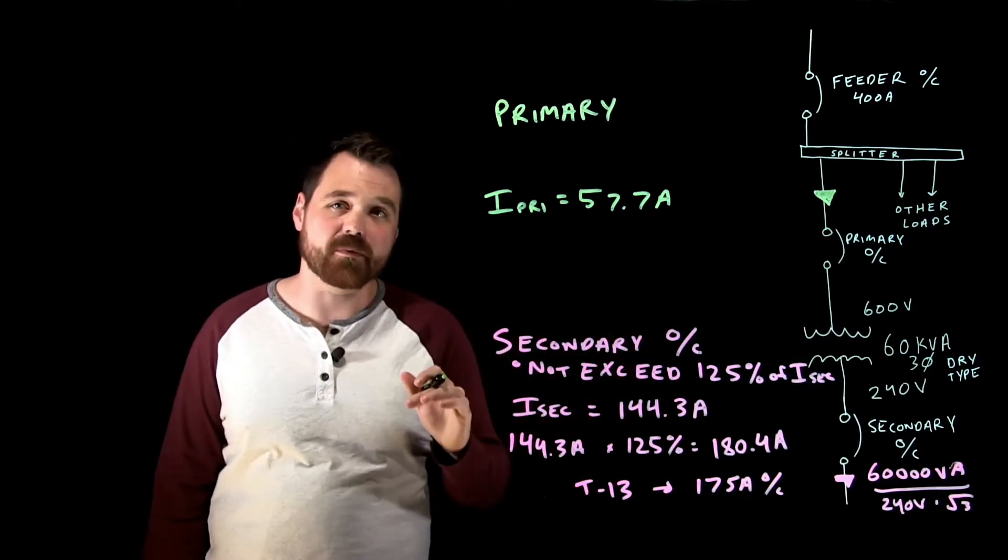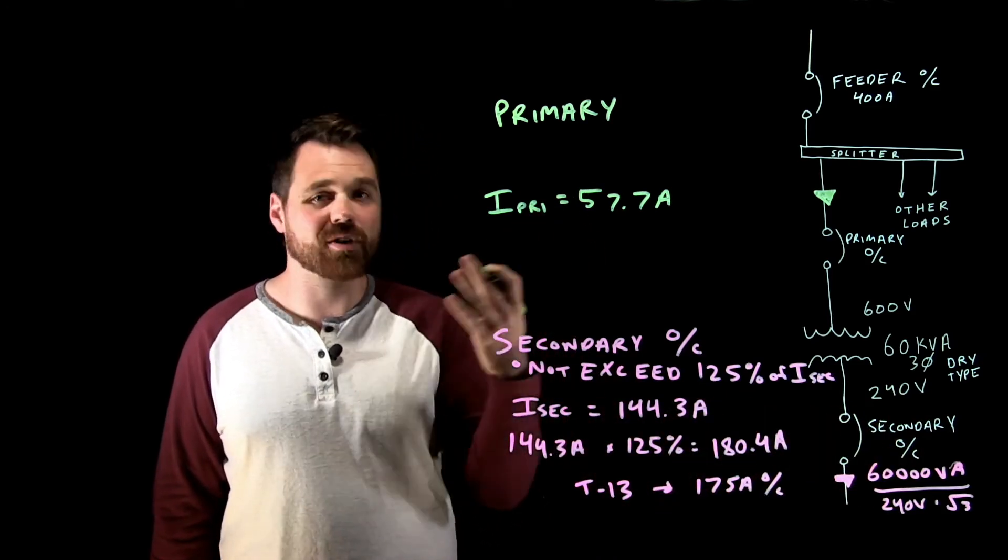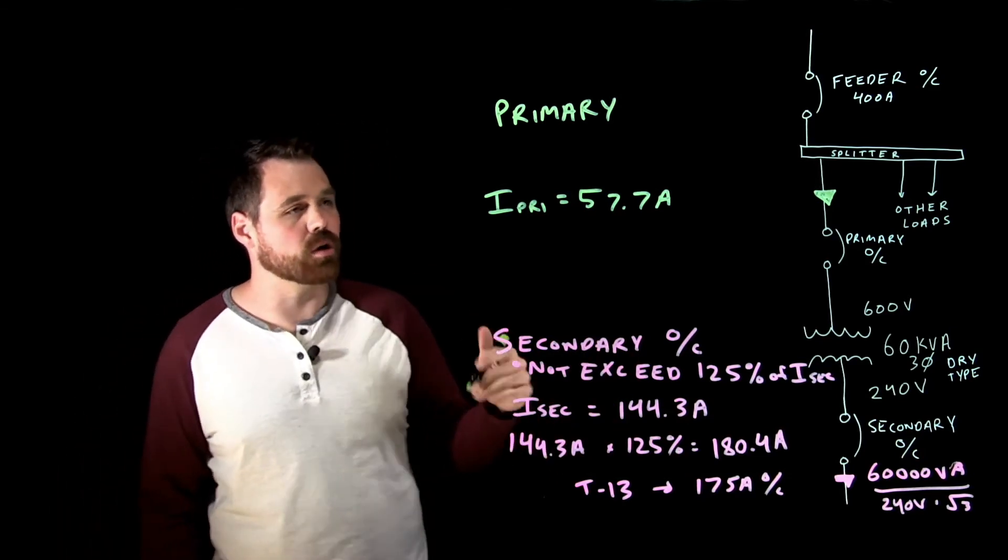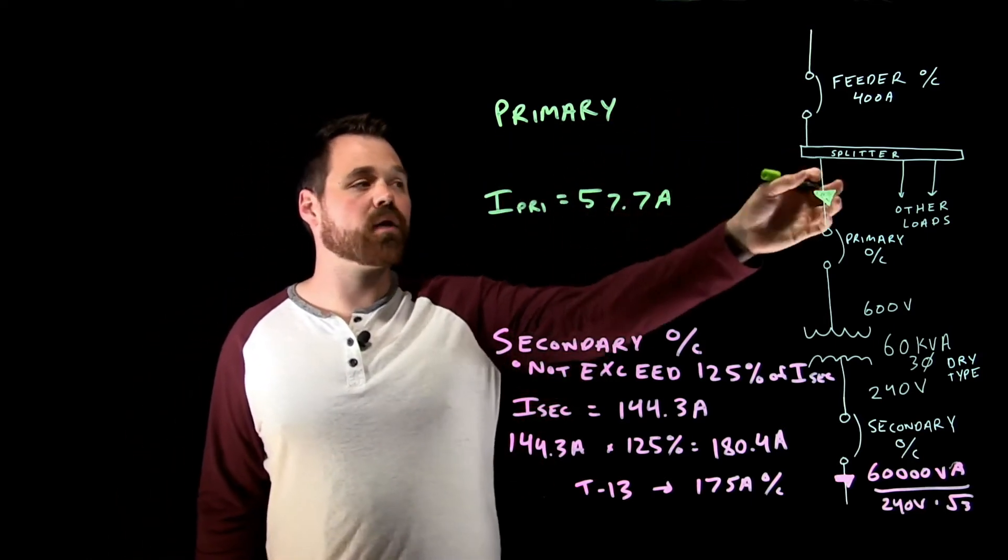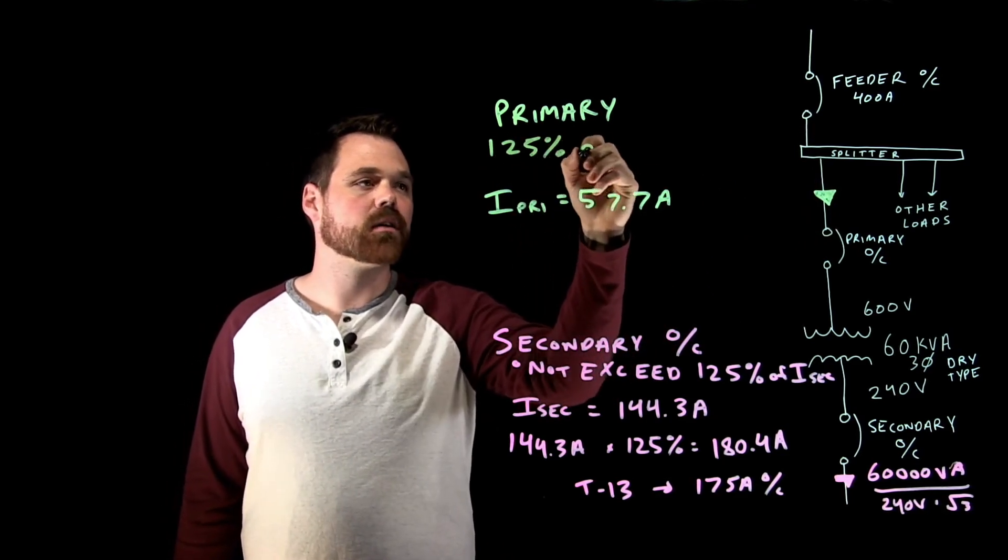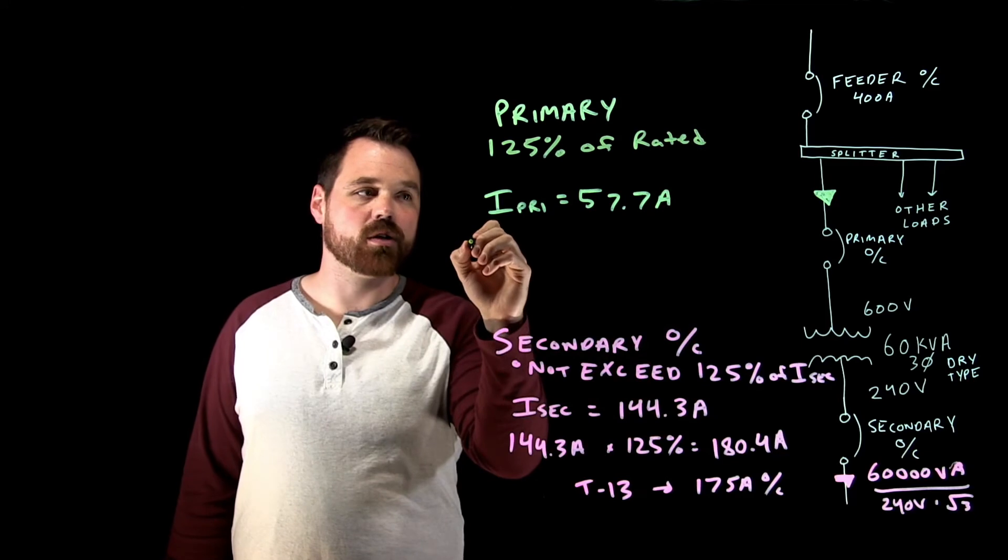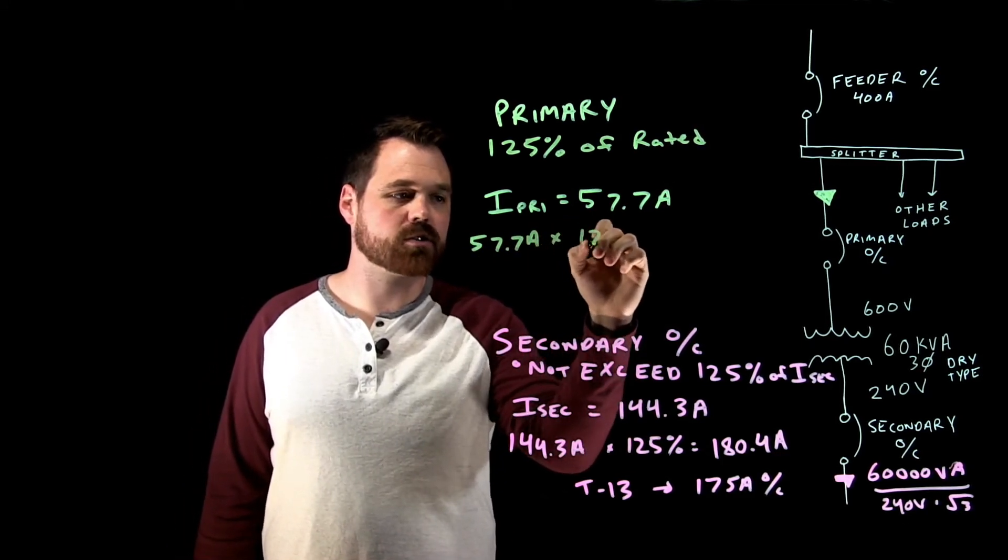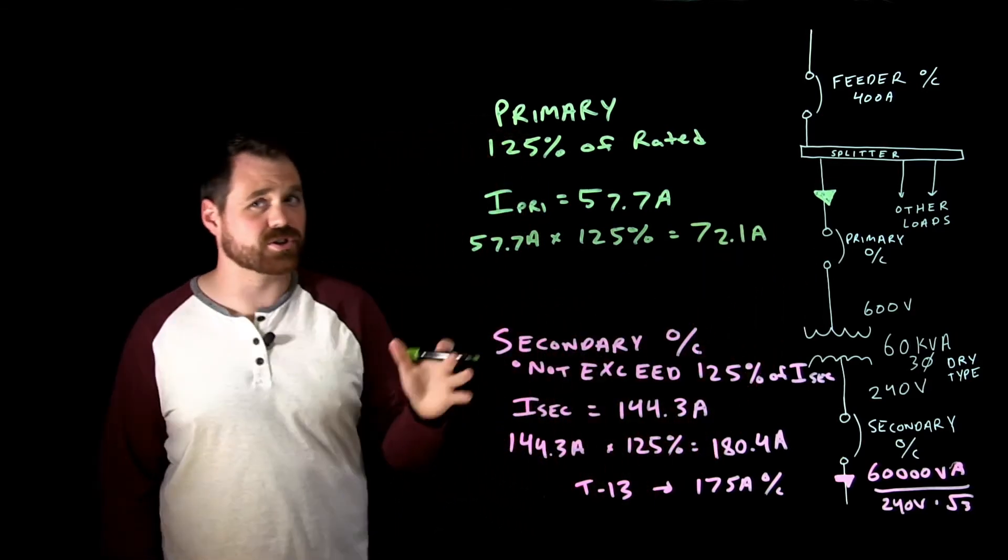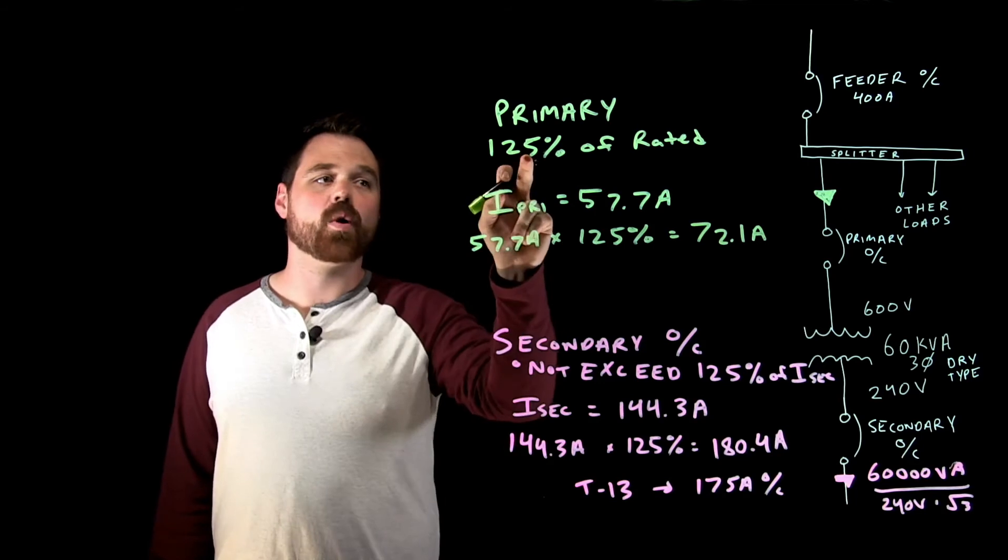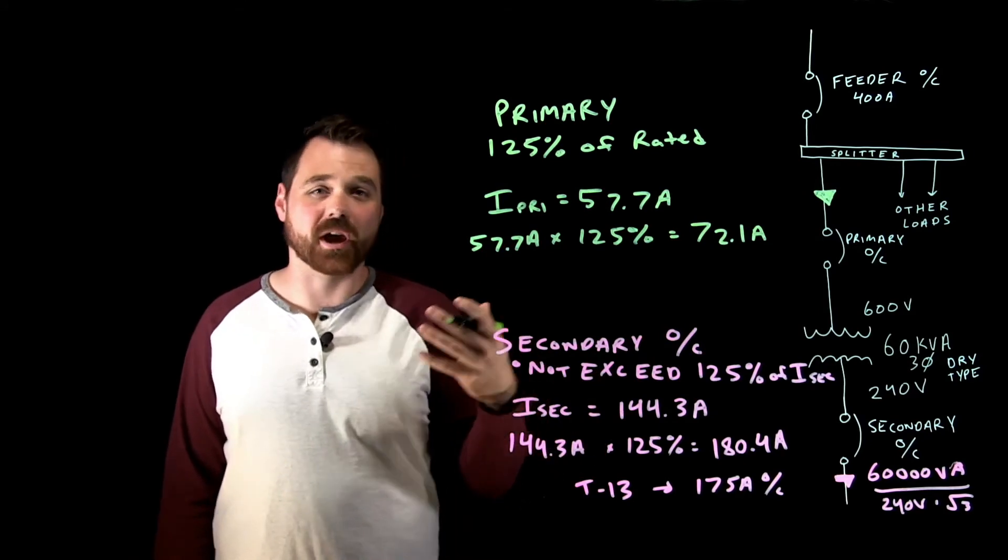We just determined we need one anyways. Also if I had no secondary overcurrent at all then I 100 percent will need that primary overcurrent and this is how we size it. I have my primary current 57.7 amps. This tells me my primary overcurrent device needs to be 125 percent of rated current. So in this case we are going to go 57.7 amps times 125 percent which gives us 72.1 amps.